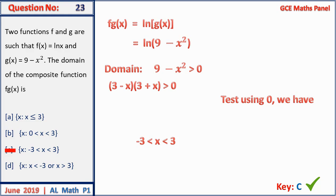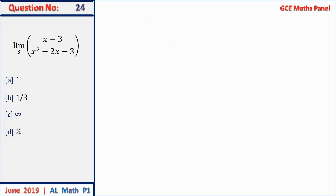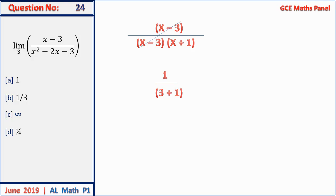Question 24: find the limit of the function. Direct substitution of 3 gives 0/0, so we factorize both numerator and denominator. The denominator factors as (x − 3)(x + 1), allowing cancellation. The limit becomes 1/(3 + 1) = 1/4.